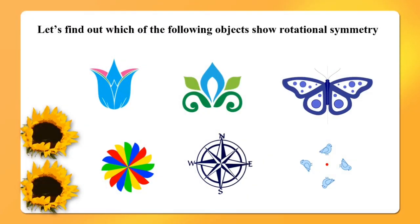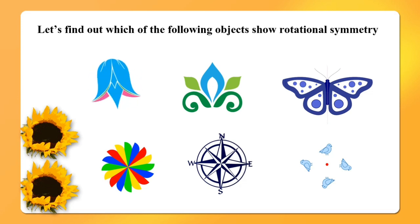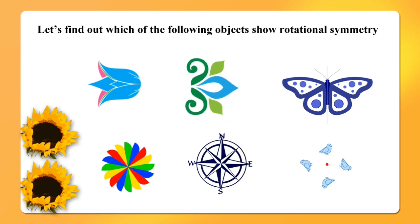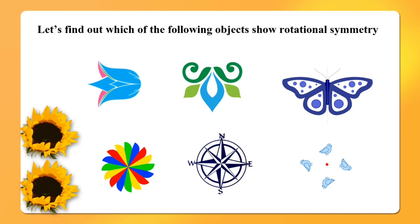Let's find out which of the following objects show rotational symmetry. Here are six objects. The first figure is a flower. When you rotate it a quarter turn (1/4 turn), the flower is not looking the same as before. When you rotate it half a turn, the flower is still not looking the same. So the flower does not show rotational symmetry. Next, the second figure: turn it half a turn — the figure looks upside down but is not looking the same as before. So this also does not show any rotational symmetry.